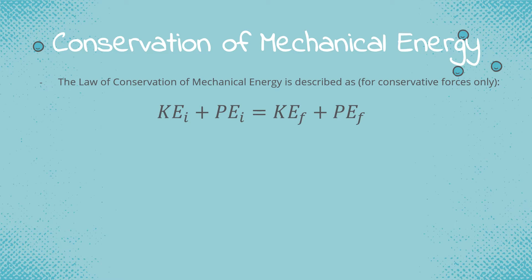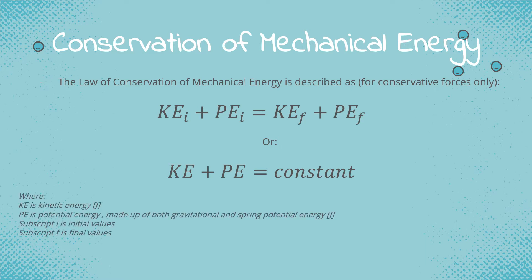The conservation of mechanical energy is given by: KE_i + PE_i = KE_f + PE_f. The subscript i represents initial and f represents final. We have two sources of potential energy: gravitational and spring. Another way of stating this is that the sum of kinetic energy and potential energy remains constant. Mechanical energy is simply equal to the sum of potential energy and kinetic energy, so the mechanical energy in the initial phase equals the mechanical energy in the final stage.